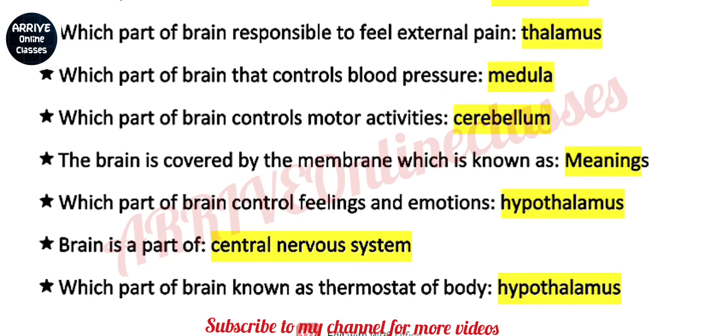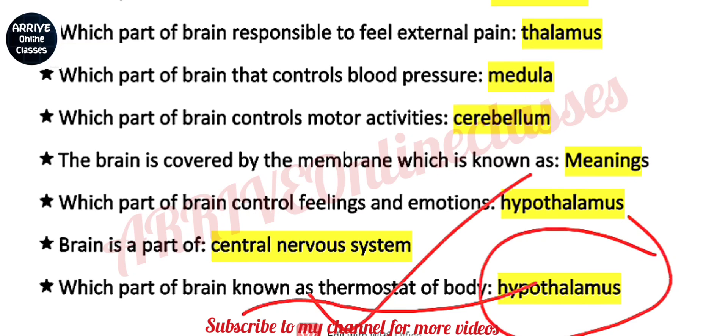Next question: which part of brain is known as the thermostat of the body? Very important — the answer is hypothalamus, because hypothalamus controls body temperature. That is why the word thermostat is used for it.